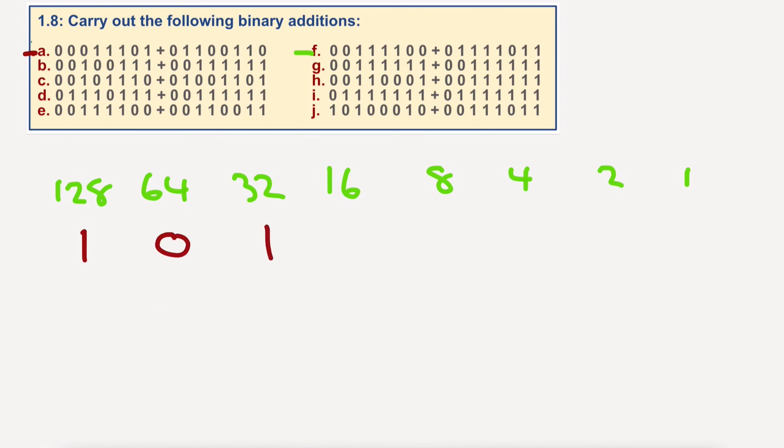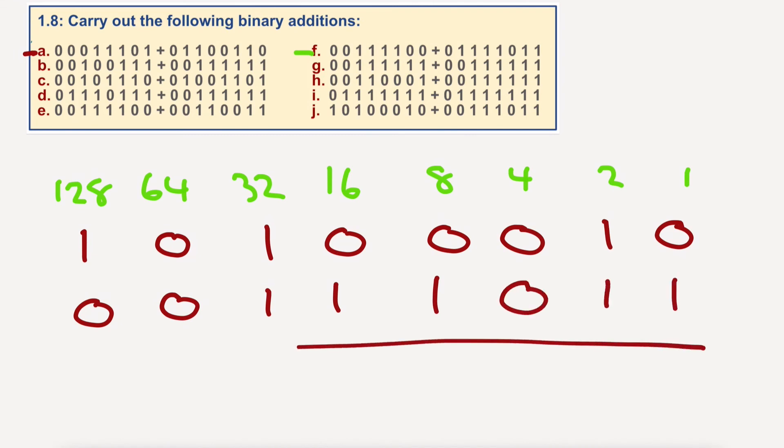And for J, 1, 0, 1, 0, 0, 1, 0. And we've got 0, 0, 1, 1, 1, 0, 1, 1.